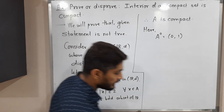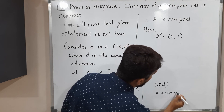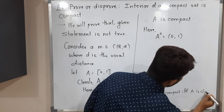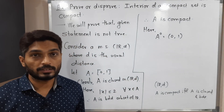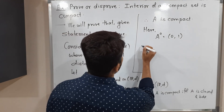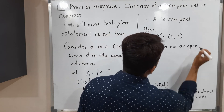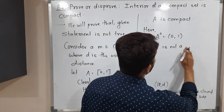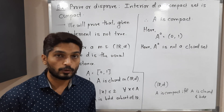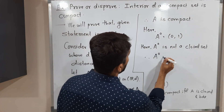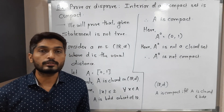Recall the result: in R^d, A is compact if and only if A is closed and bounded. Is the interior (0, 1) a closed set? No, it is an open set in R — it is not a closed set. So the condition is not satisfied, and therefore the interior of A is not compact.